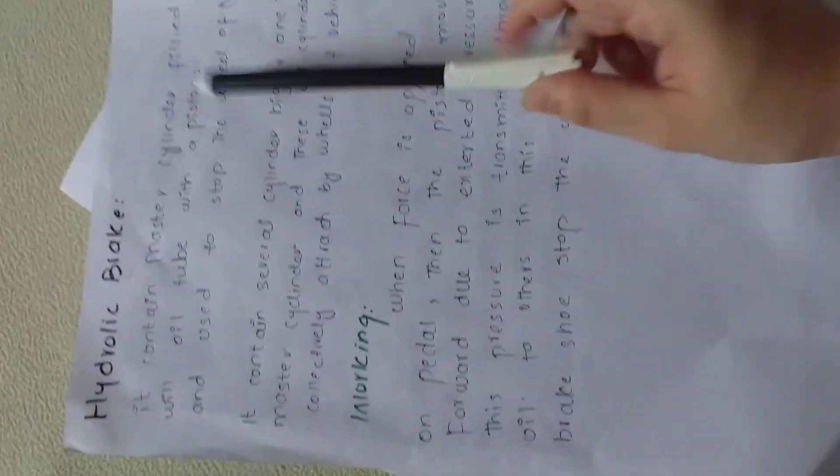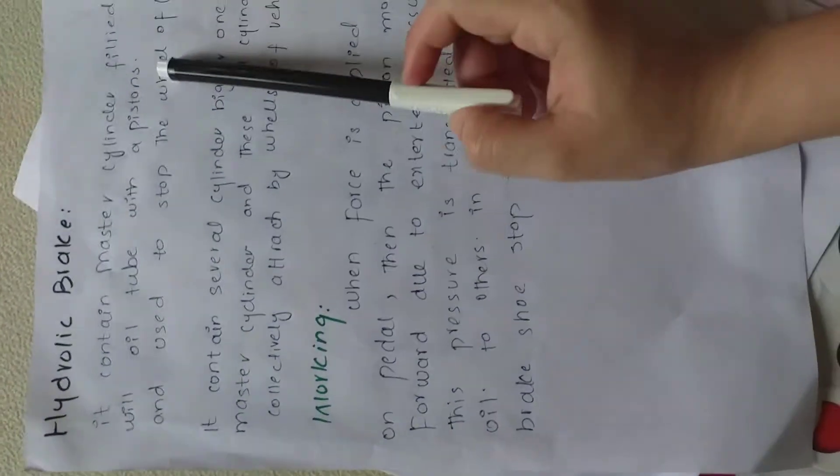With oil tube, with a piston, a movable piston, and used to stop the wheel of the vehicle. We have a tube in this tube with oil and a movable piston with force which creates pressure.